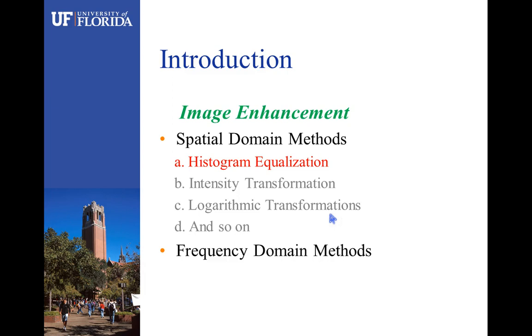Histogram Equalization performs its operation by remapping the gray levels of the image based on the probability distribution of the input gray levels.